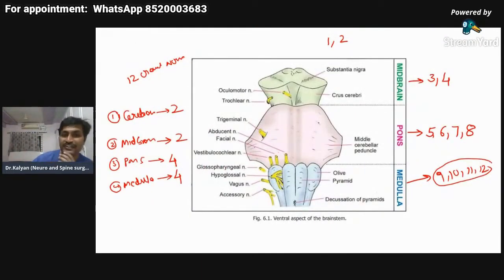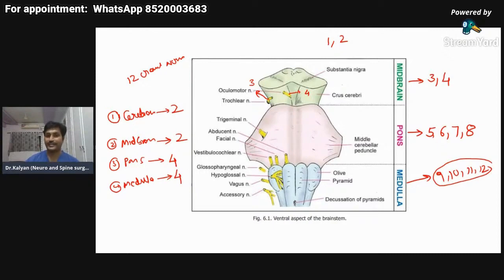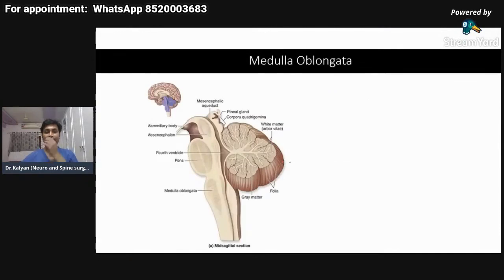Coming back to the cranial nerves on the brainstem: from the midbrain we have cranial nerves 3 and 4 — the oculomotor and trochlear nerves. From the pons we have four cranial nerves: the 5th, 6th, 7th, and 8th. From the medulla oblongata we have the remaining four cranial nerves. When I cover each individual structure, I will return to the individual cranial nerves in more detail.